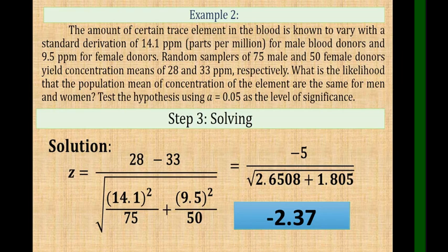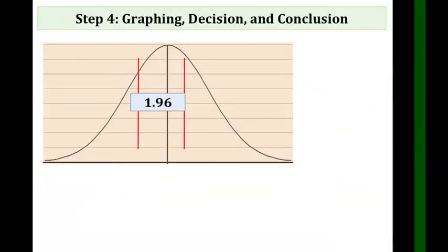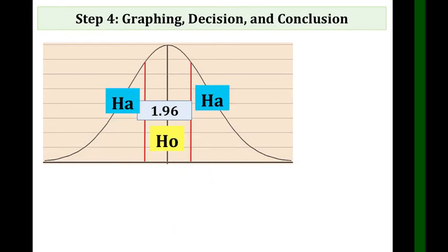For the decision, this is our critical region. If it goes beyond, accept HA. If it's inside, accept HO. Our answer is negative 2.37, which is obviously less than negative 1.96, right?